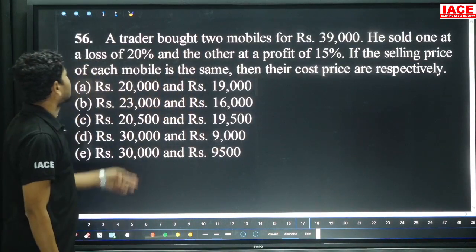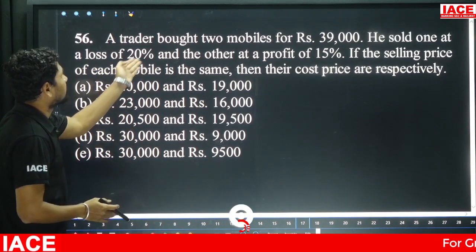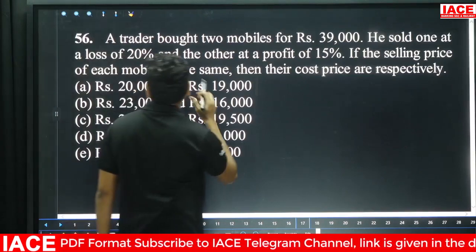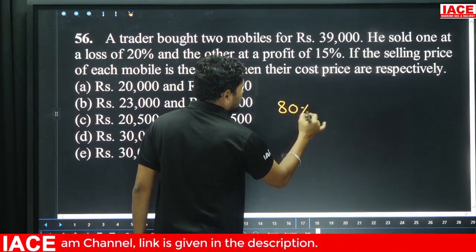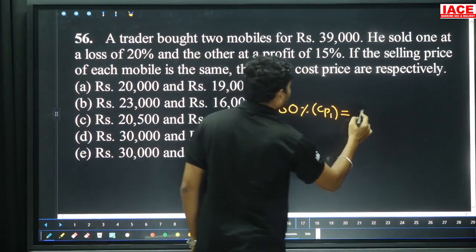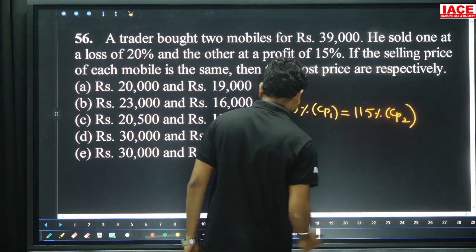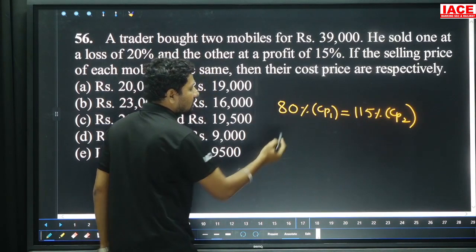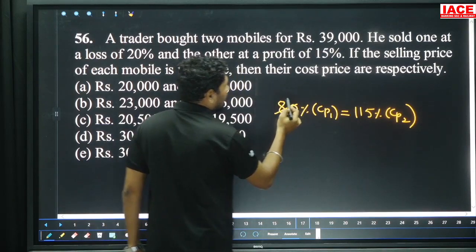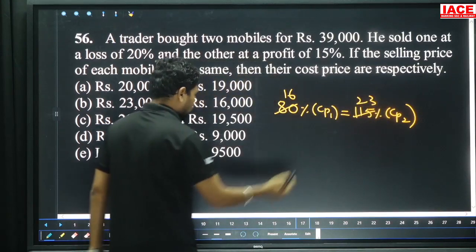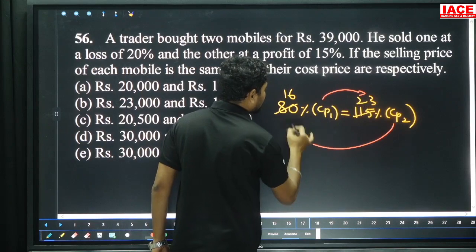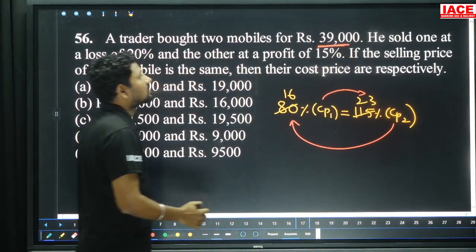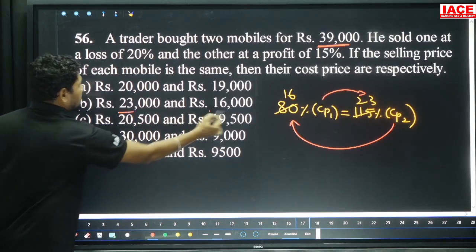Next, miscellaneous question: A trader bought two mobiles for 39,000. He sold one at a 20 percentage loss, the other at 50 percentage profit. If the selling price of each mobile is the same, find the cost price of each. 20 percentage loss means 80 percentage of CP1 equals 115 percentage of CP2 (50% profit). Cancelling values: CP1 equals 23 parts, CP2 equals 16 parts. 23 plus 16 is 39 parts, which equals 39,000 — distributing gives option B.